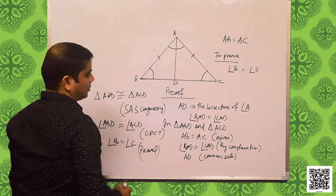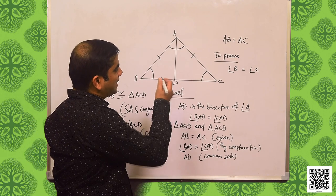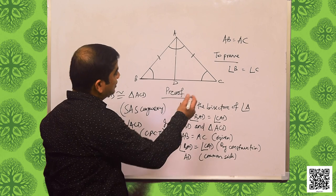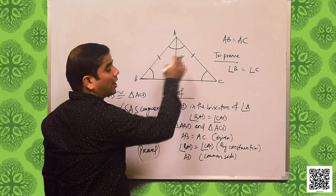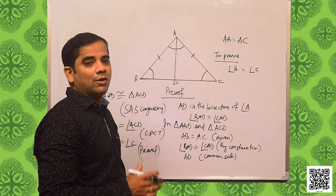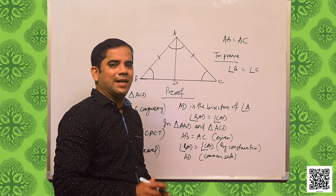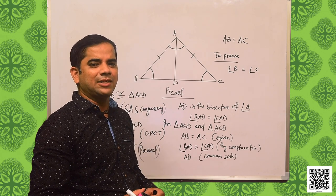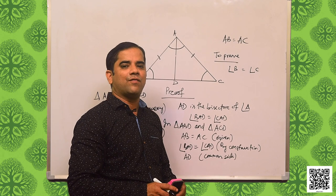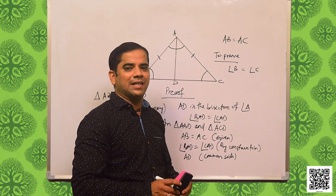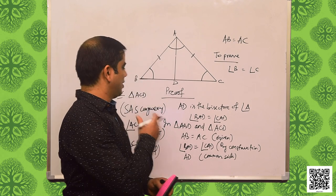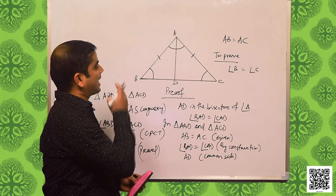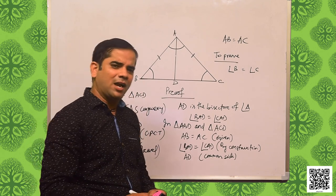So, what we come to know is that in case of an isosceles triangle, the angles opposite to the equal sides are also equal to each other. Theorem 7.2 says: angles opposite to equal sides of an isosceles triangle are equal. We have proved it using triangle ABC. Hope you have understood.